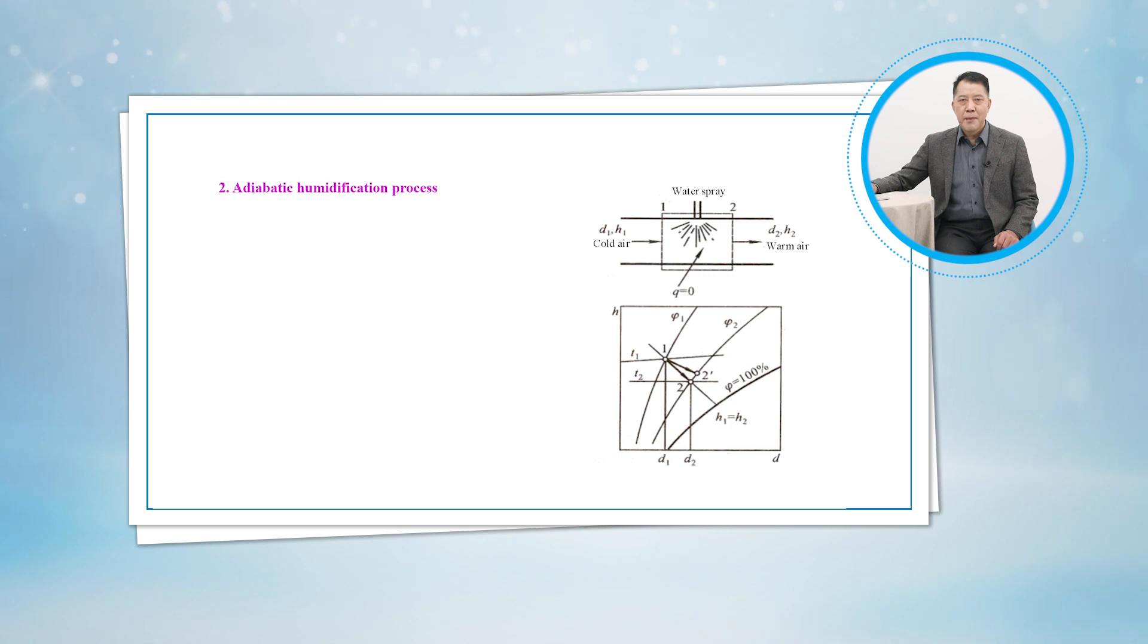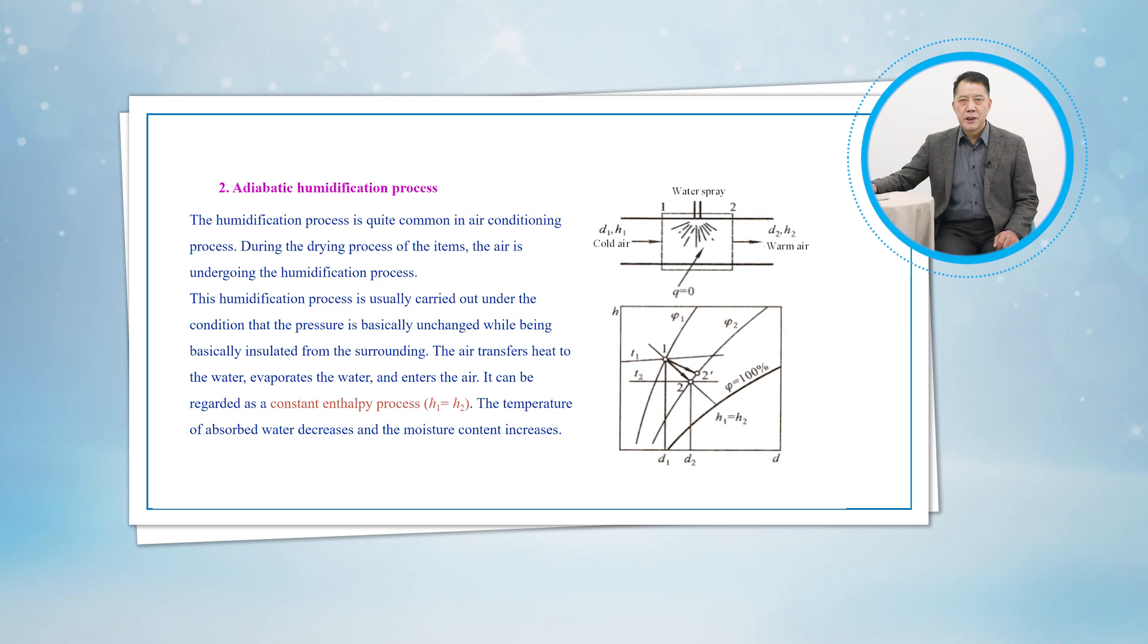Process 1 to 2 or 1 to 2 prime shown in the figure. Process 2 to 3 is an atmospheric humidification process and is quite common in air conditioning. The location of state 2 depends on how the humidification is accomplished. If steam is introduced in the humidification section, this will result in humidification with additional heating.